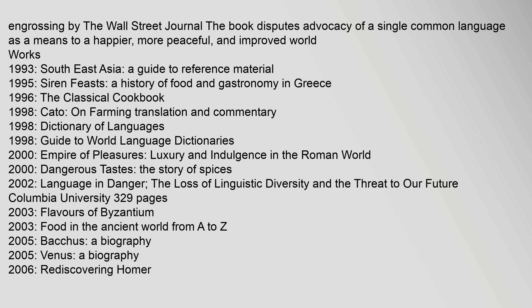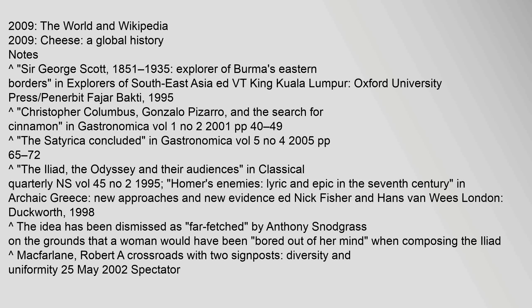Works: 1993 Southeast Asia: A Guide to Reference Material. 1995 Siren Feasts: A History of Food and Gastronomy in Greece. 1996 The Classical Cookbook. 1998 Cato: On Farming, Translation and Commentary. 1998 Dictionary of Languages. 1998 Guide to World Language Dictionaries. 2000 Empire of Pleasures: Luxury and Indulgence in the Roman World. 2000 Dangerous Tastes: The Story of Spices. 2002 Language in Danger: The Loss of Linguistic Diversity and the Threat to Our Future. 2003 Flavors of Byzantium. 2003 Food in the Ancient World from A to Z. 2005 Bacchus: A Biography. 2005 Venus: A Biography. 2006 Rediscovering Homer. 2009 The World and Wikipedia. 2009 Cheese: A Global History.